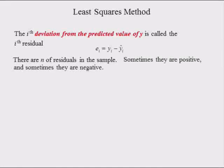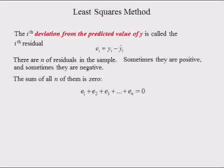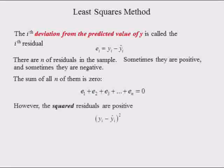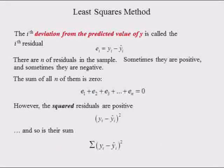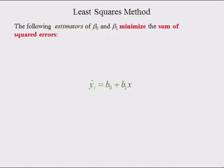Sometimes residuals are positive and sometimes they are negative. The sum of all n residuals is equal to 0. However, the squared residuals, or squared errors, are positive, and so is their sum, which we denote as the sum of squared errors. Remember, residuals are estimated errors. The following estimators of intercept beta 0 and slope beta 1 minimize the sum of squared errors, which is why we call this method least squares.